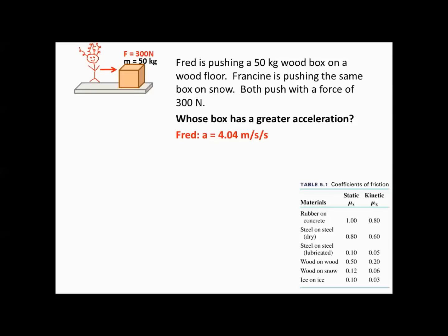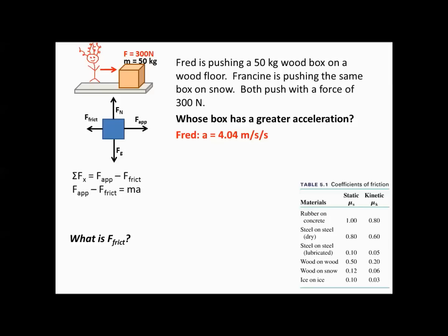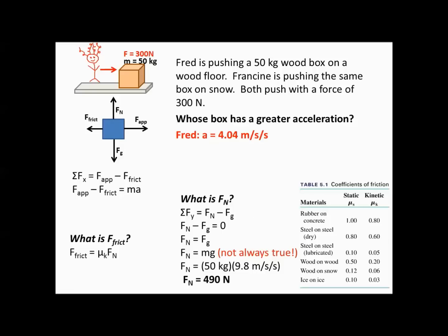Now we'll do the same problem for Francine. Fred is 4.04 meters per second squared — let's find Francine's. Her free body diagram looks the same, and all the calculations will be the same except the coefficient of friction will be different. The normal force calculation gives us 490 newtons. For Francine, she has wood on snow, so the kinetic coefficient is smaller: 0.06. That gives her a force of friction of 29.4 newtons.